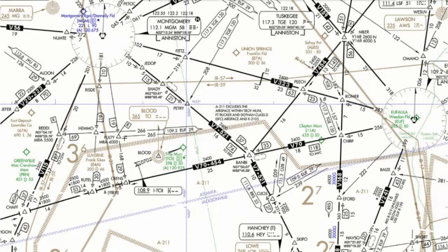Hi everyone, this is Will with KL Aviation. This lesson comes to us thanks to a question posted on our website, KLAviation.com. John asks how we would file a flight plan from an airport that does not have a standard instrument departure procedure. Here we are in lower Alabama — we're looking at the Troy Municipal Airport. For this example, we want to go from Troy to Pensacola Airport, which is down to the southwest, and to do so we're going to need to use Victor 70 or Victor 20 to get there.